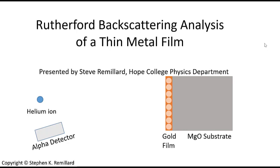The data I will analyze for you today is from helium ion backscattering off of a gold thin film on a magnesium oxide substrate. The ion arrives normal to the film and scatters at an angle to an alpha detector. In this example, we'll analyze the energy spectrum of the backscattered alpha particles.